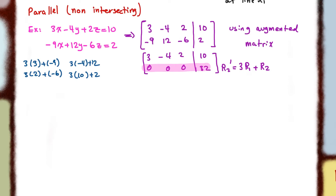If we take the last row, we get zero Z is equal to 32, and that's impossible — we cannot have a Z value there. It does not exist, and therefore we have no solutions. Whenever you have the last row where the three values on the left-hand side equal zero and the right-hand side equals a non-zero value, that means it just doesn't work. If there is no solution, it means there is no intersection, and if they're not intersecting, they must be parallel.